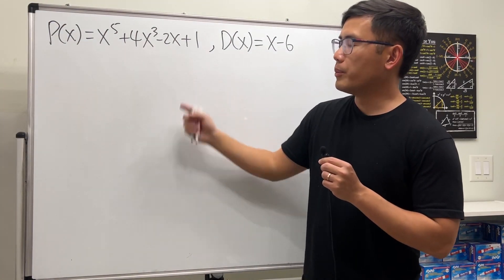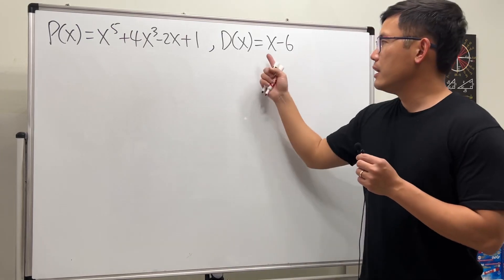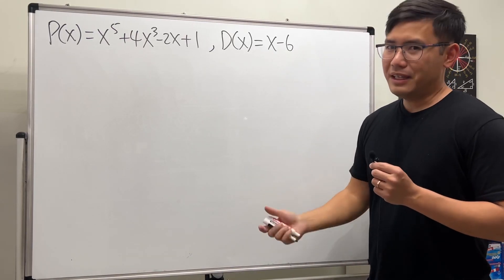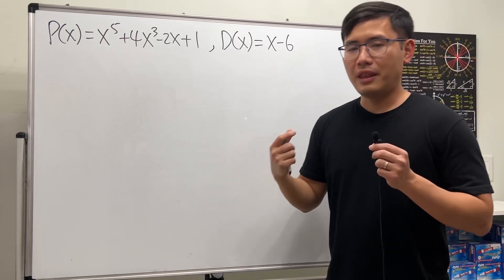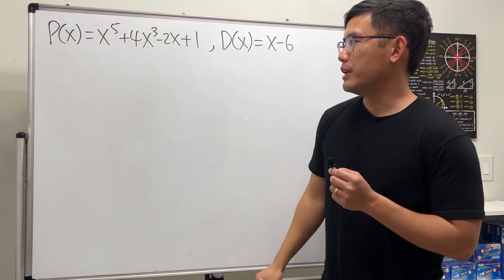Here we're given this quintic polynomial and we want to divide that by x minus 6. Thankfully this is just x minus a number, so we can use synthetic division. Let's go ahead and get to work.